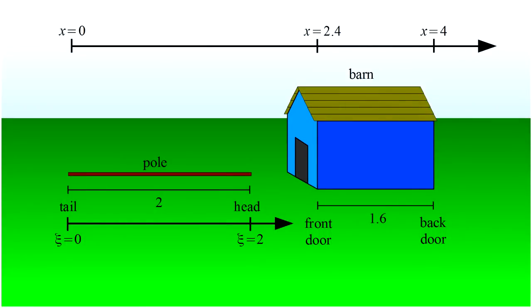Back to our pole and barn scenario. We consider the barn to be at rest and use Latin letters for its coordinates. Specifically, the front door is at x equals 2.4 and the back door at x equals 4. The pole is moving at three-fifths the speed of light and we use Greek letters for its coordinates. Specifically, the tail is at psi equals 0 and the head at psi equals 2.